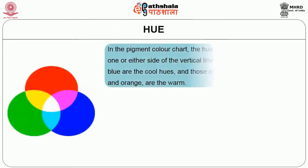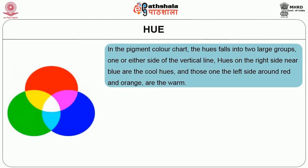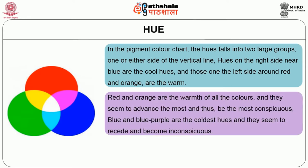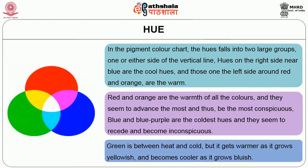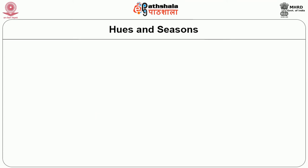In the pigment color chart, the hues fall into two large groups, one on either side of the vertical line. Hues on the right side near blue are the cool hues, and those on the left side around red and orange are the warm. Red and orange are the warmest of all the colors and they seem to advance the most and thus be the most conspicuous. Blue hues and blue-purple are the coldest hues and they seem to recede and become inconspicuous. Green is between heat and cold, but it gets warmer as it grows yellowish and becomes cooler as it grows bluish.